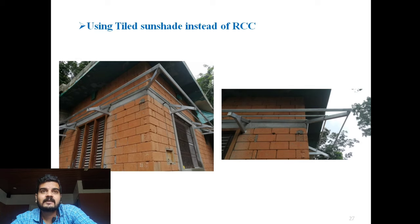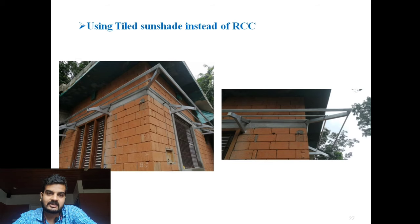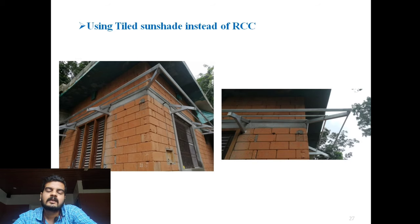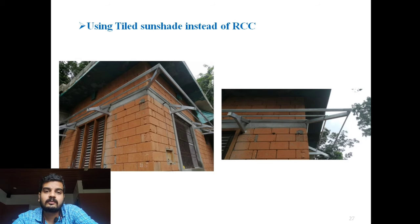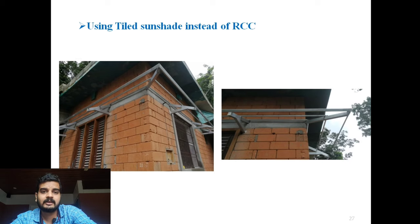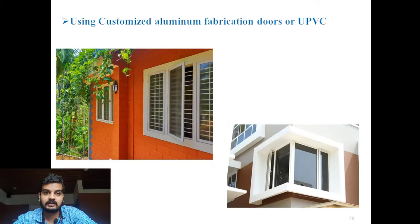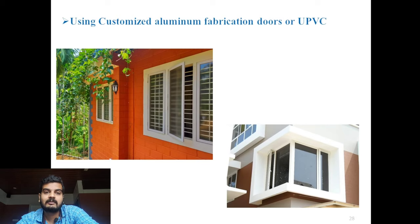Another cost reduction method is using a tiled sunshade instead of RCC. An RCC sunshade involves labor cost, plastering, and painting. But with this truss work — steel pipes with Mangalore tiles laid over them — the sunshade is finished. This is one method to reduce the cost of sunshades, and it gives a more attractive, aesthetic look compared to a cement concrete sunshade.